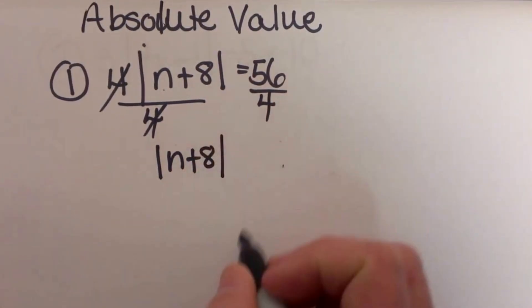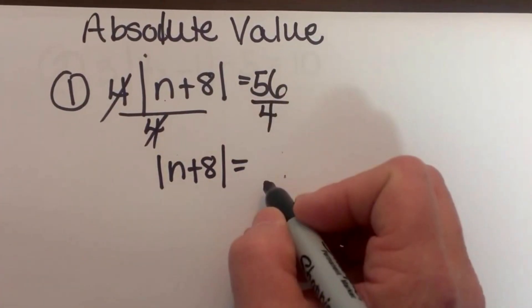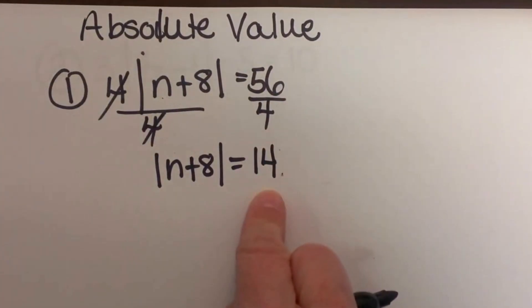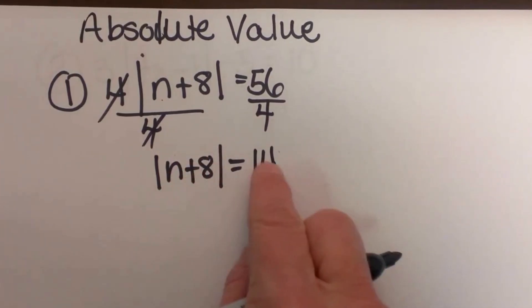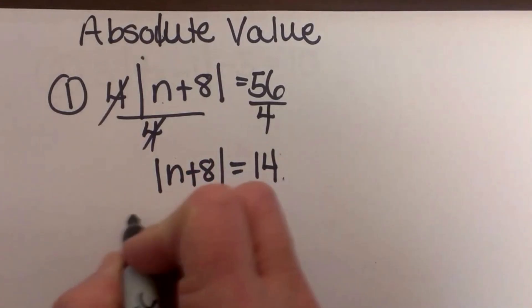N plus 8 in the absolute value bars is equal to 56 divided by 4, which is 14. From here I have to set up two equations because the value inside the absolute value can either be equal to positive 14 or negative 14, so I have to look at both cases.